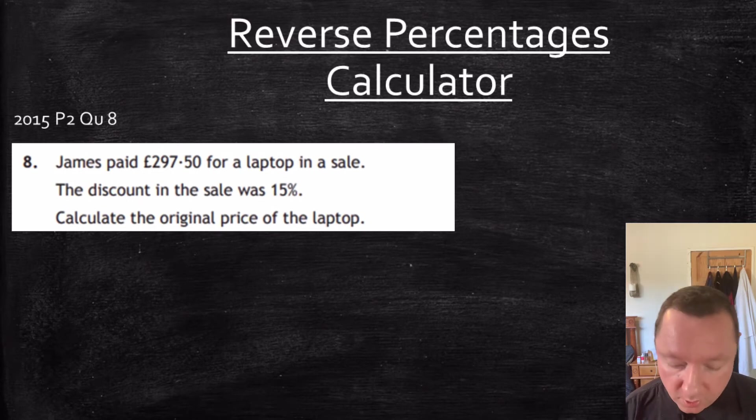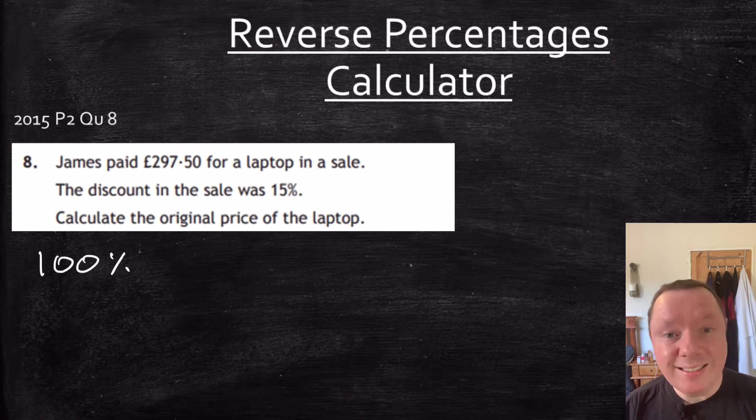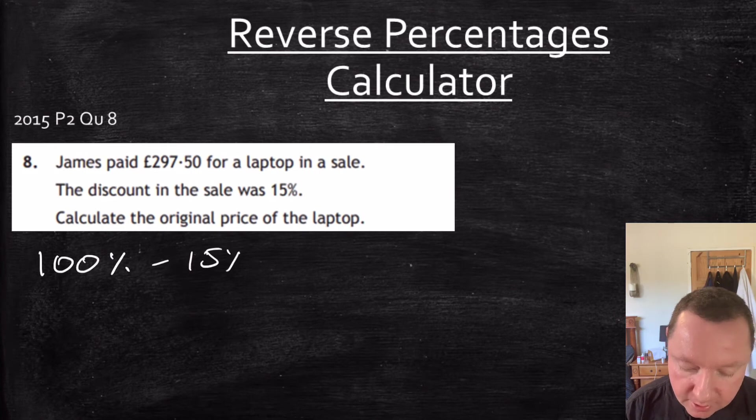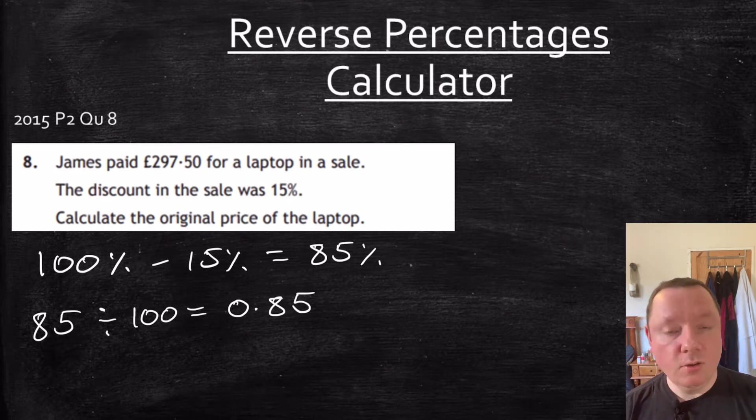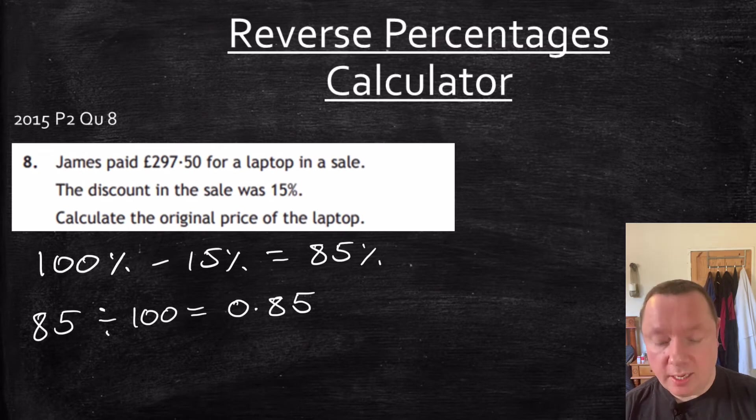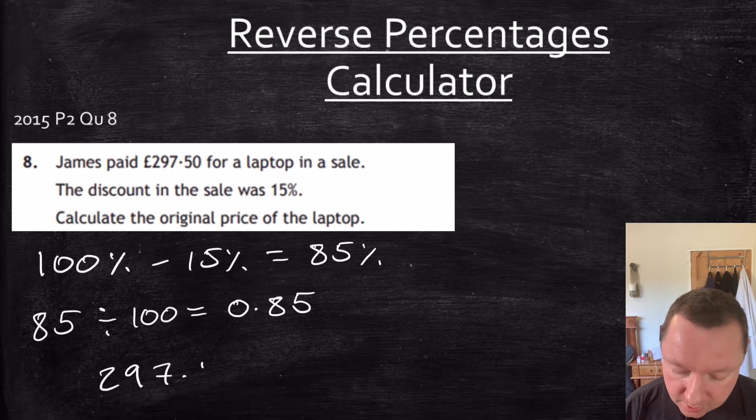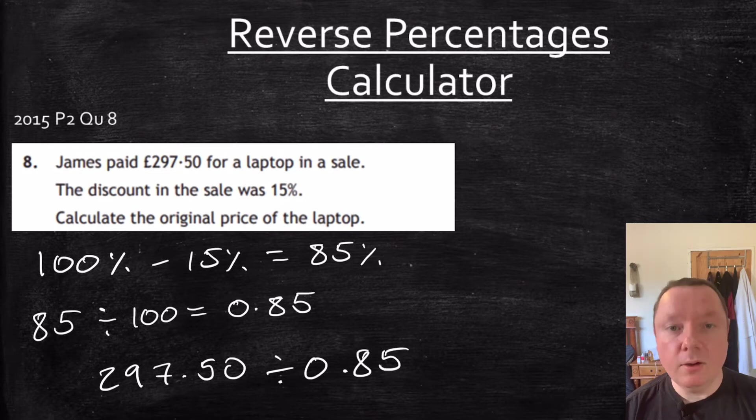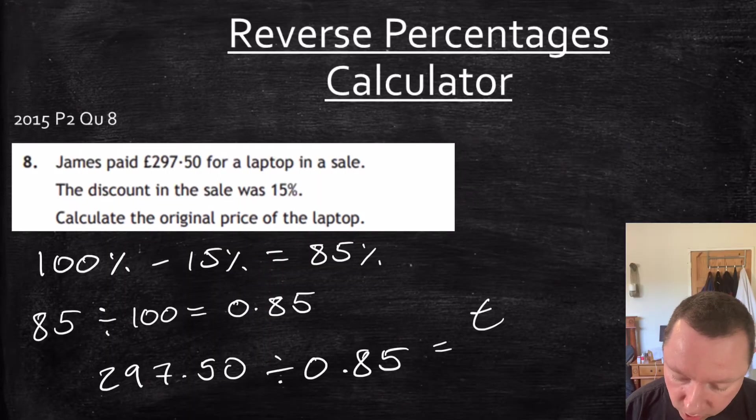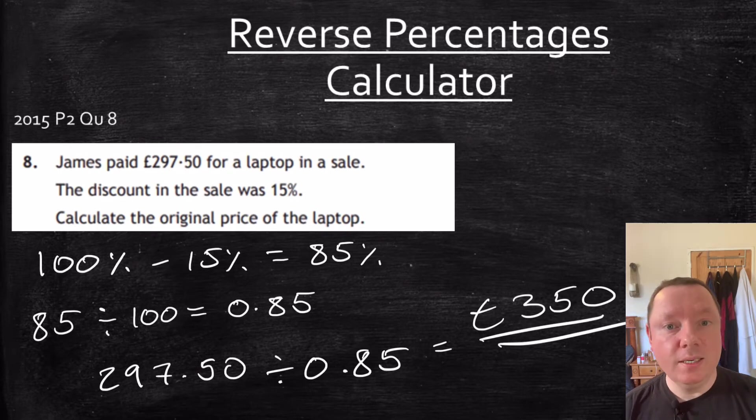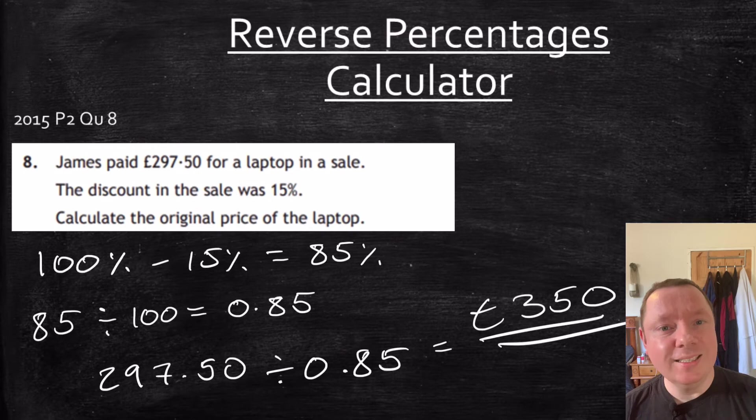We start off in the same way by doing the multiplier. So we've got 100%. It was in a discount, so it's been taken off. So minus 15%. That leaves 85%. Change that to a decimal in the normal way. Divide by 100 to get 0.85. So now since we're going backwards, we're not going to times by 0.85 because we're going to try to get back to the original price. So we divide by 0.85. So 297.50 divided by 0.85. Exactly 350. So our answer is 350 pounds. Notice there's no time in this question. If you don't notice time, it might be divide. We look for things like original price.